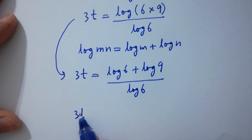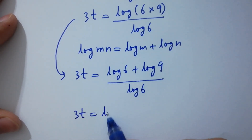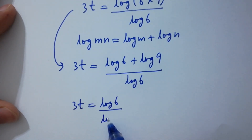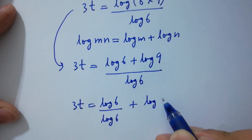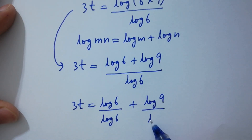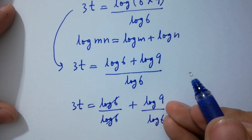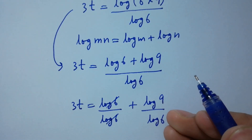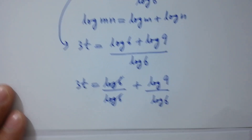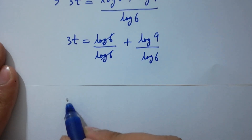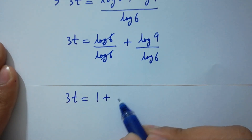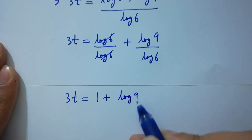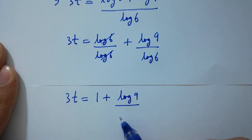Separating the fractions: 3t equals log 6 over log 6 plus log 9 over log 6. Log 6 over log 6 cancels to give 1, so 3t equals 1 plus log 9 over log 6.